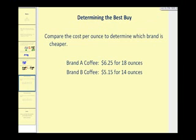Another great use of unit rates is when you're trying to determine the best buy of similar products. As you know, when you go to the store and compare brands, it's sometimes confusing because the size of the package is never the same. So here, when we're comparing two brands of coffee, brand A costs $6.25 for 18 ounces, and brand B costs $5.15 for 14 ounces. If we can find the unit rate for each of these, or the cost per ounce, we can determine which one is the best buy.